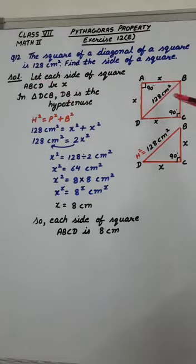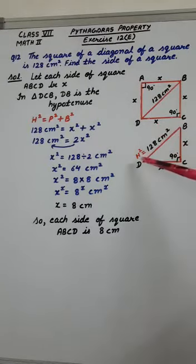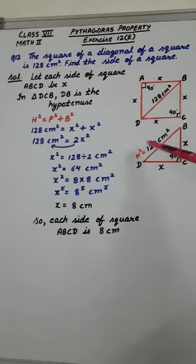Now I have drawn this triangle separately here, triangle DCB. And as we know each angle of a square is of 90 degrees, so opposite to 90 degrees, this one, DB is the hypotenuse.